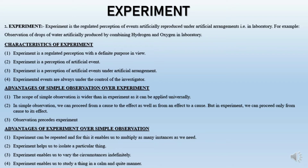Now, the advantages of experiment over simple observation. First, experiment can be repeated, and this enables us to multiply as many instances as we need. As experiment is done artificially — we have to reproduce it — it is possible for us to repeatedly experiment on our subject. Secondly, experiment helps us to isolate a particular thing. Since experiment is done in an artificial arrangement, it is possible for us to isolate the different parts of a phenomenon.